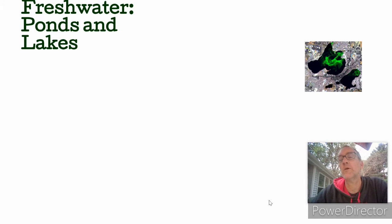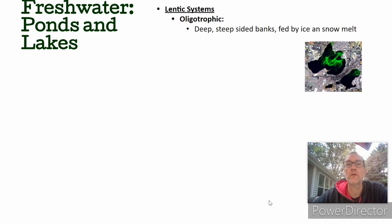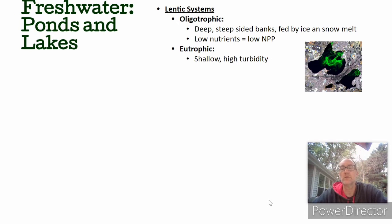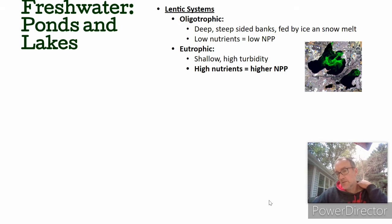Ponds and lakes — here there's a picture of our lakes, Lake Mendota and Monona. Lakes are lentic versus lotic; they are not moving. There are two distinct types: oligotrophic lakes, which are deep, steep-bank lakes usually found in higher mountains or areas like northern Wisconsin or northern Minnesota. They're fairly deep and clean, with low nutrients and low net primary production. In contrast, eutrophic lakes, which we're familiar with here in southern Wisconsin, are shallow with high turbidity and high nutrients, but have higher net primary production.